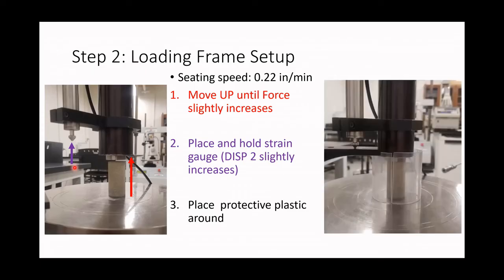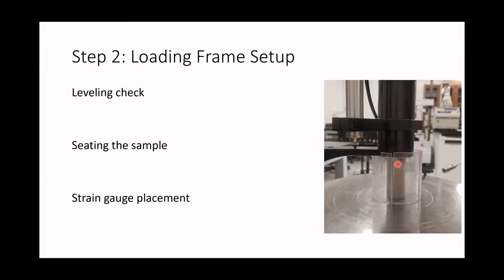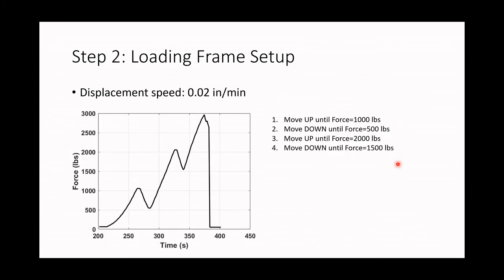The final setup before fracturing the rock has the sample in contact, the strain gauge placed, and the protective plastic around the sample. Once we have these three aspects ready, we can start fracturing the rock. Now we follow the same procedure but using the displacement speed instead of the seating speed. We can repeat loading and unloading forces to observe how the Young Modulus behaves during this cycle — increasing force moving up, then moving down to unload, repeating a couple of times before increasing until the rock fractures.